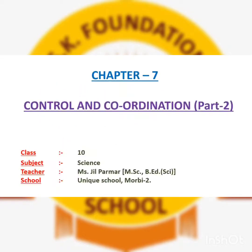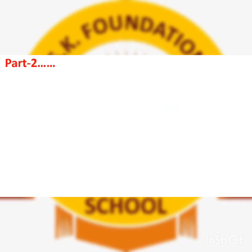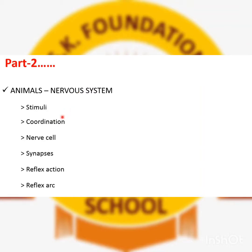Hello everyone. Today we are going to learn part 2 of chapter 7, Control and Coordination, from grade 10. In part 2 we will learn about the animal nervous system. The topics we have to learn are: stimuli, coordination, nerve cell, synapse, reflex action, and reflex arc — these 6 things in the animal nervous system.